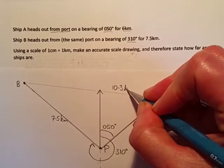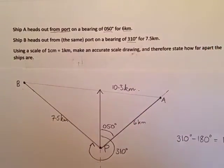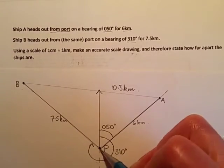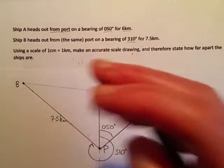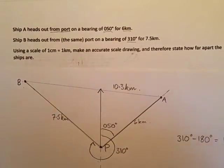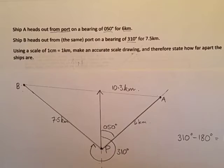And because we're using a nice simple scale, we can say the ships are 10.3 kilometres apart. Because if you've drawn these two accurately, then this one should give you an accurate distance between your two ships.